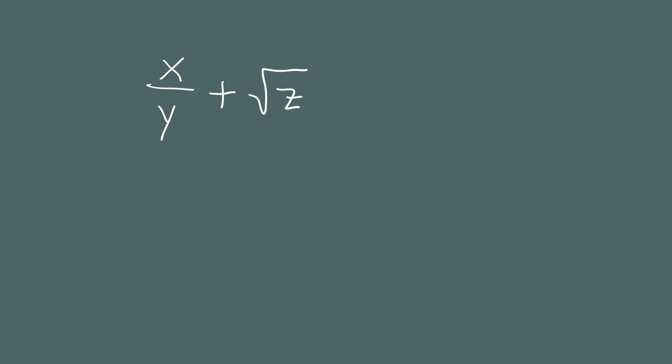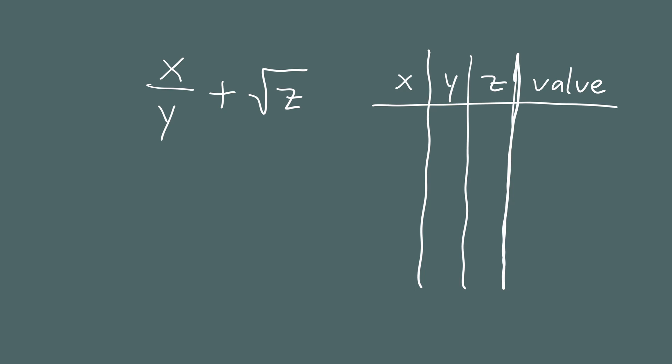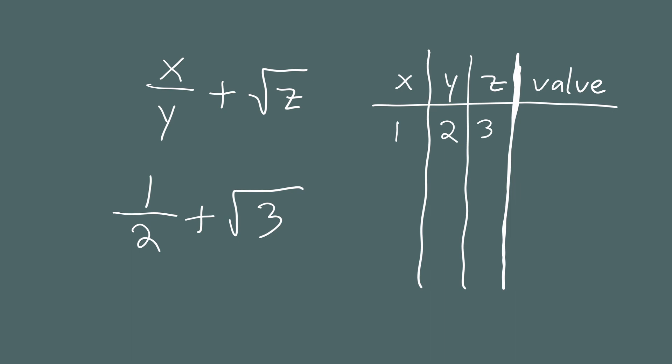Let's jump to the final example: x divided by y plus the square root of z. Here we have three variables — x, y, and z — so we can pick any three numbers and plug them in. Remember, we can't plug in zero for y because that would give division by zero. We'll keep a table with columns for x, y, z, and the value we get. Let's plug in 1 for x, 2 for y, and 3 for z. We get one half plus the square root of 3, which using a calculator is approximately 2.232.